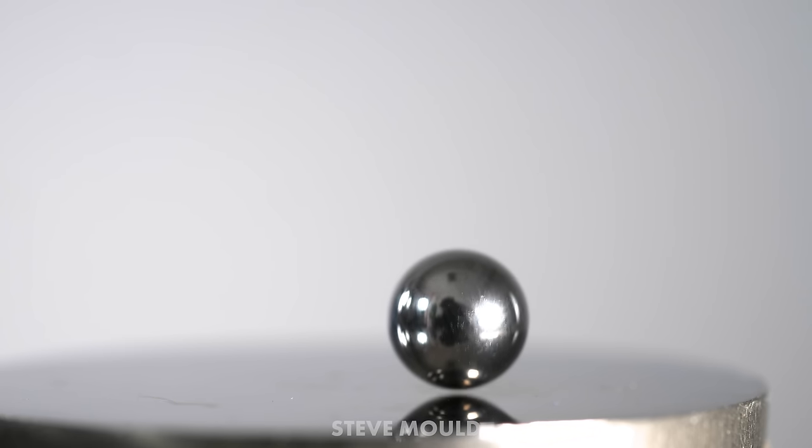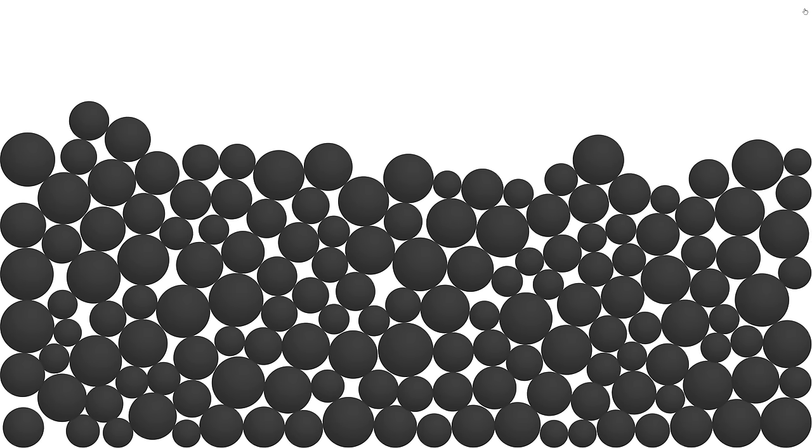Well technically you should be able to make any metal amorphous so long as you can cool it down quick enough. But if your metal isn't an alloy then all the atoms are the same size and it's just too easy to fall into a regular lattice pattern. By creating an alloy of metals with different sized atoms it's harder for them to find that regular repeating pattern and so you don't have to cool it down so quickly.